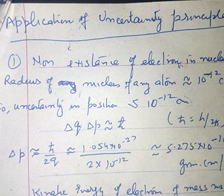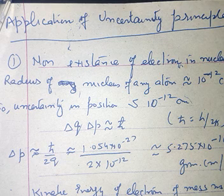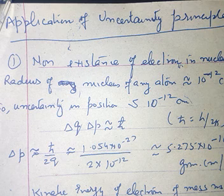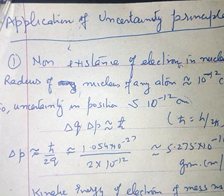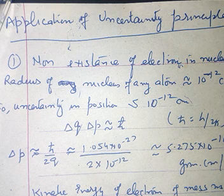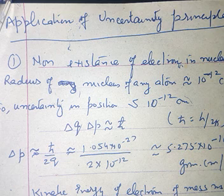Today we will be discussing applications of the uncertainty principle. According to the uncertainty principle, the position and momentum of a particle cannot be measured with accuracy. While according to classical ideas, it is possible to predict exactly the position and momentum of the particle at any instant when the initial momentum and position is known.